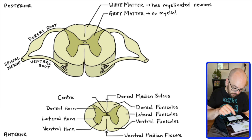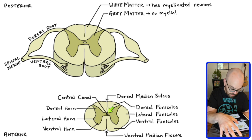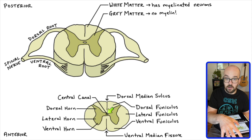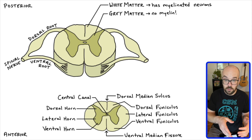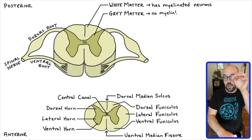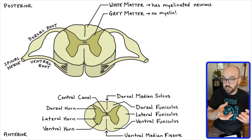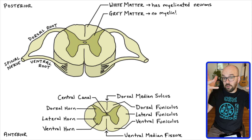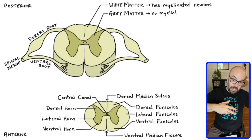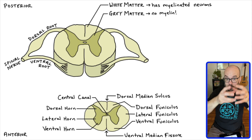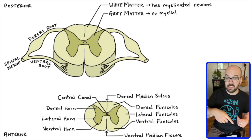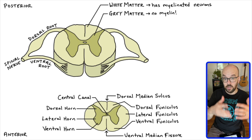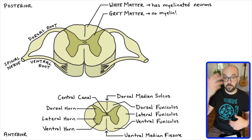You'll notice on diagrams there's a tiny circle right in the middle of the gray matter. That little circle is called the central canal, and it's filled with cerebrospinal fluid. If you follow that canal all the way up into the brain, it connects to the ventricles of the brain where cerebrospinal fluid is produced. That's how nutrients get between the brain and the spinal cord — through this canal filled with cerebrospinal fluid. It's not about sending signals, but rather about sending nutrients along the spinal cord and brain.